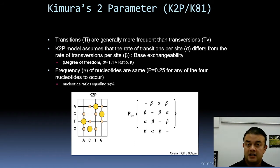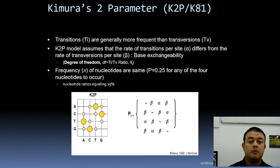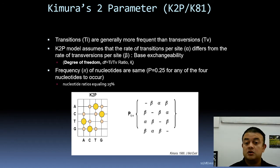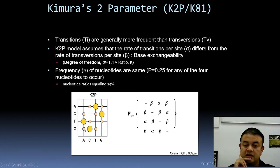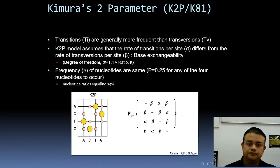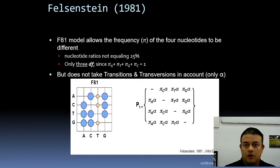K2P is a bit more relaxed than JC69 because transitions and transversions can have different probabilities. In the Q-matrix you can see that G to A transitions have a different probability than transversions like T to A or G to C. Different transitions and transversions can have different probabilities. That is what K2P is about.